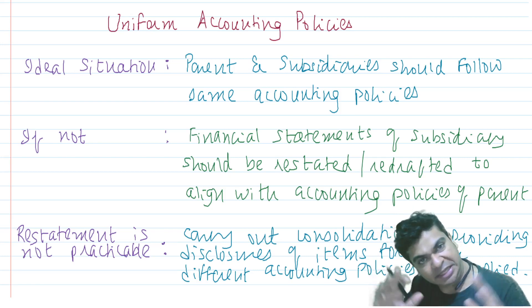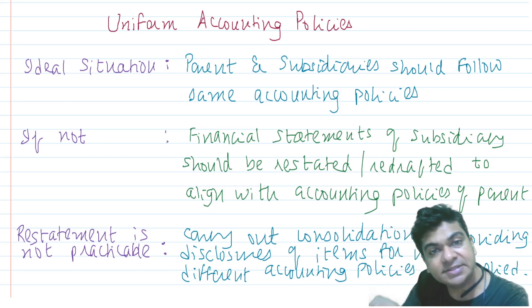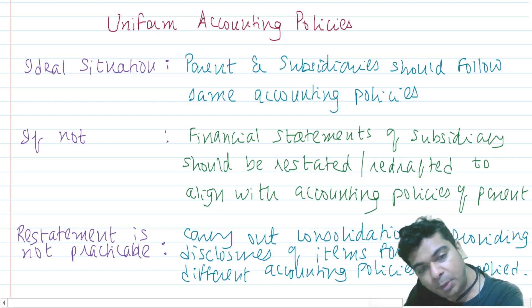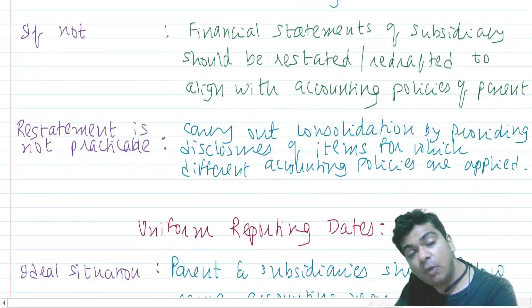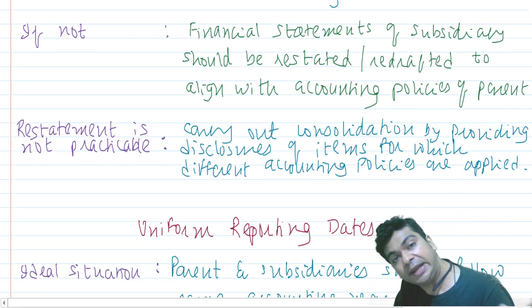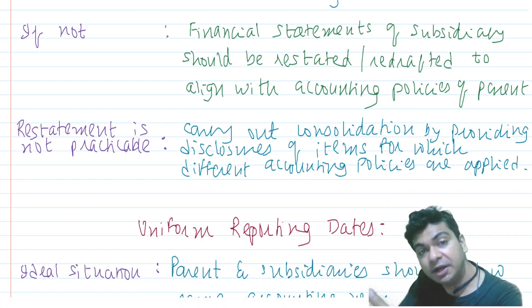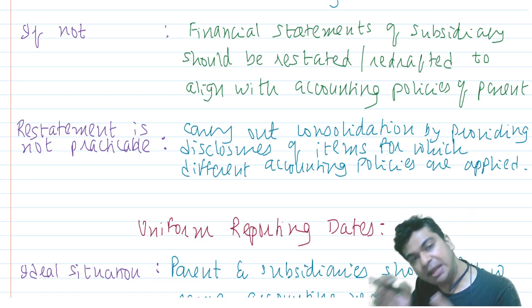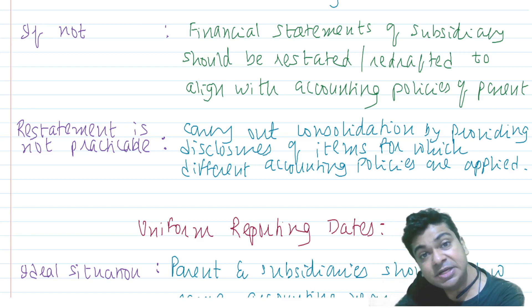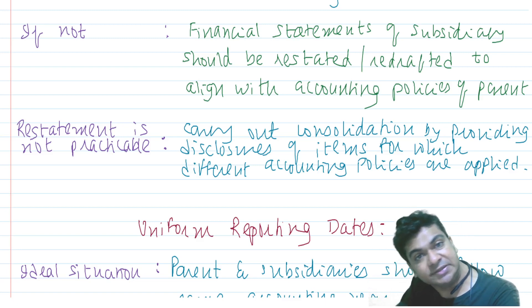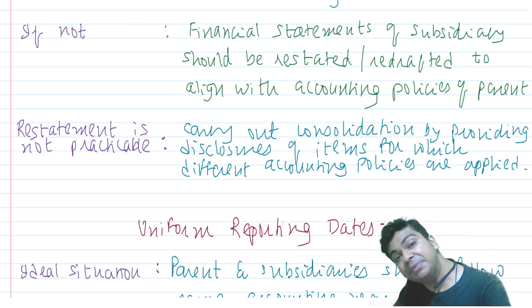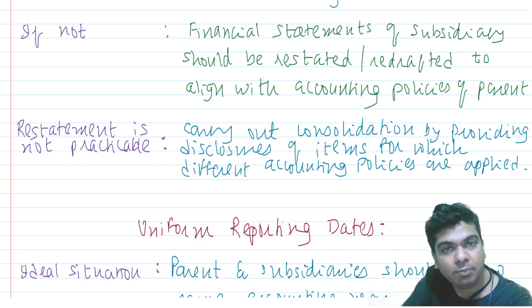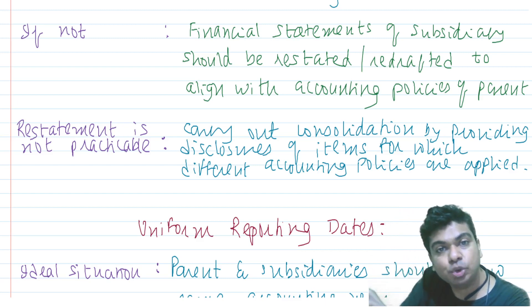That's the ideal situation — every company in the group follows the same accounting policy. What if this ideal situation is not possible? For example, you are acquiring shares of some subsidiary but that subsidiary is following the weighted average method for inventory valuation, while as a parent you are following the FIFO method. You ask the subsidiary to change, but the subsidiary argues that all other companies in the same industry are following the same accounting policy, so it would like to continue with that.